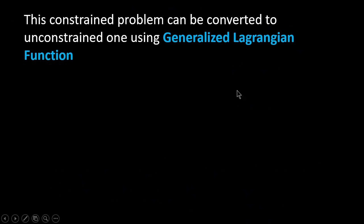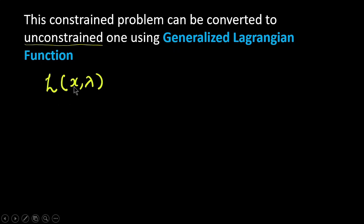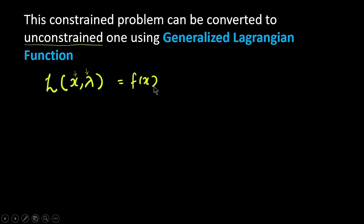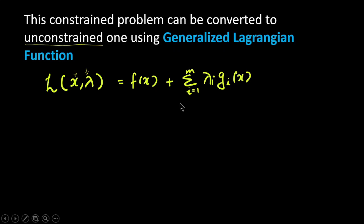The constraints can be converted to an unconstrained function using the generalized Lagrangian function. It is represented as capital L of x and lambda, where x is the variable in our function to be minimized or maximized, and we add one more variable called lambda — that is called the Lagrangian multiplier. We convert f of x into an unconstrained function.